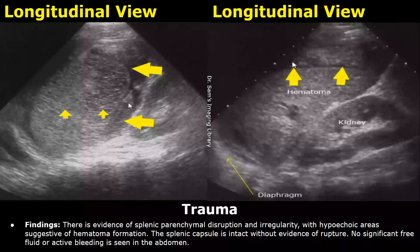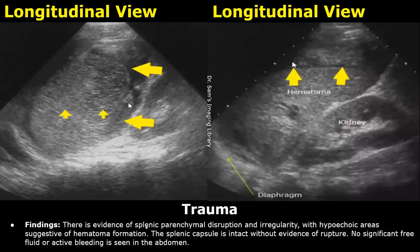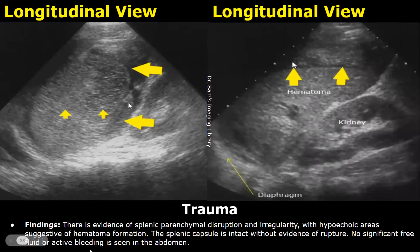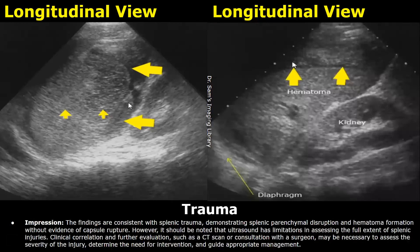Here is a case of splenic trauma. These are the findings: there is evidence of splenic parenchyma disruption and irregularity with hypoechoic areas suggestive of hematoma formation. The splenic capsule is intact without evidence of rupture. However, no significant free fluid or active bleeding is seen in the abdomen. These findings are written in the impression, and clinical correlation and further evaluation such as CT scans are advised.